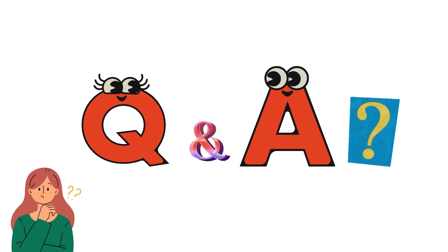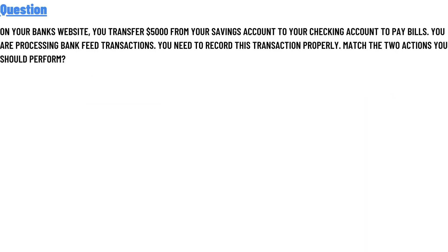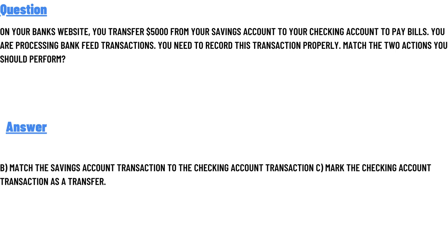Today's question: on your bank's website, you transferred five thousand dollars from your savings account to your checking account to pay bills. You are processing a bank feed transaction and need to record this transaction properly. Match the two actions you should perform. The correct answer is B: match the savings account transaction to the checking account transaction.